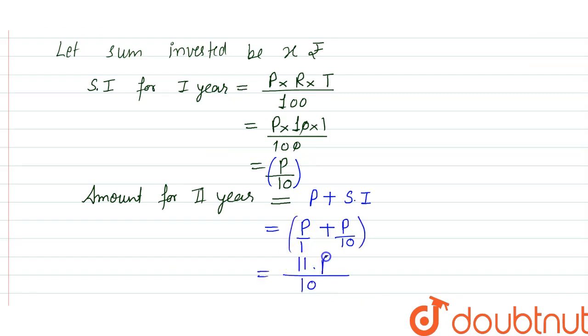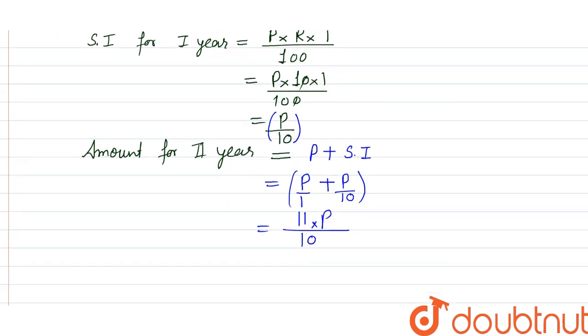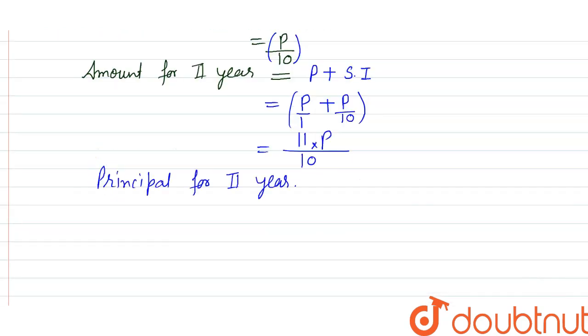Now it will work like principle for the second year. Interest will be calculated on the initial principle as well as on the simple interest for the first year. So the principle for the second year is now 11P/10. And now let's calculate simple interest.